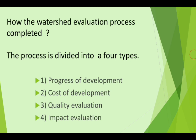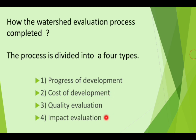How is the watershed evaluation process completed? The evaluation process is divided into four types: number one, progress of development; number two, cost of development; number three, quality evaluation; and number four, impact evaluation.